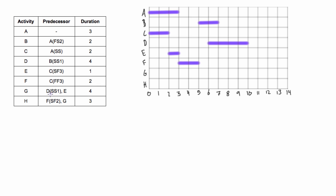Activity G depends on two things: D and E. For D, it's a start-start relationship with a lag of one. D starts on day six, so with start-start plus a lag of one, the potential starting point would be day seven. But we also have to consider that E must be done before G can start - E is finishing on day three, so that's the other potential starting place. We can't start on day three because it would violate the start-start lag of one from D. We have to satisfy both, so G starts on day seven, and with four days duration, it goes from seven out to eleven.